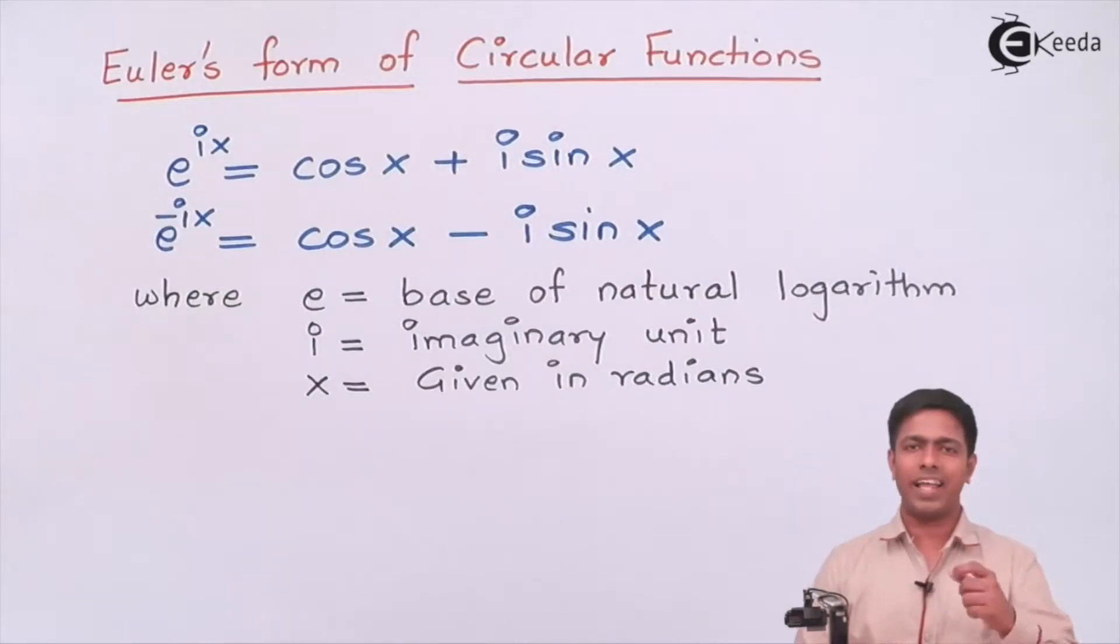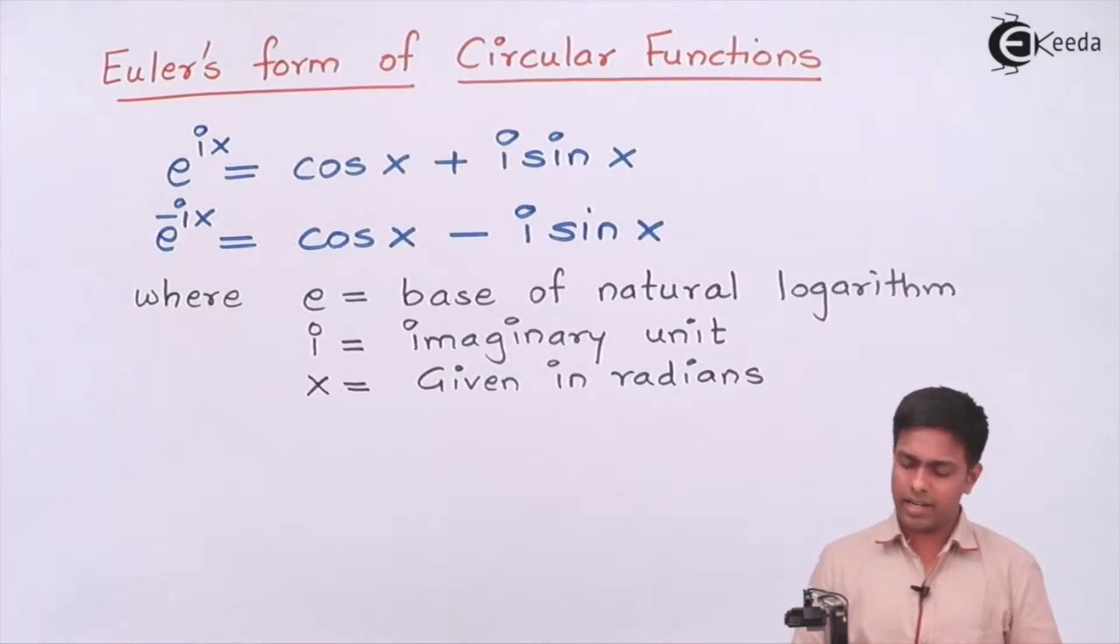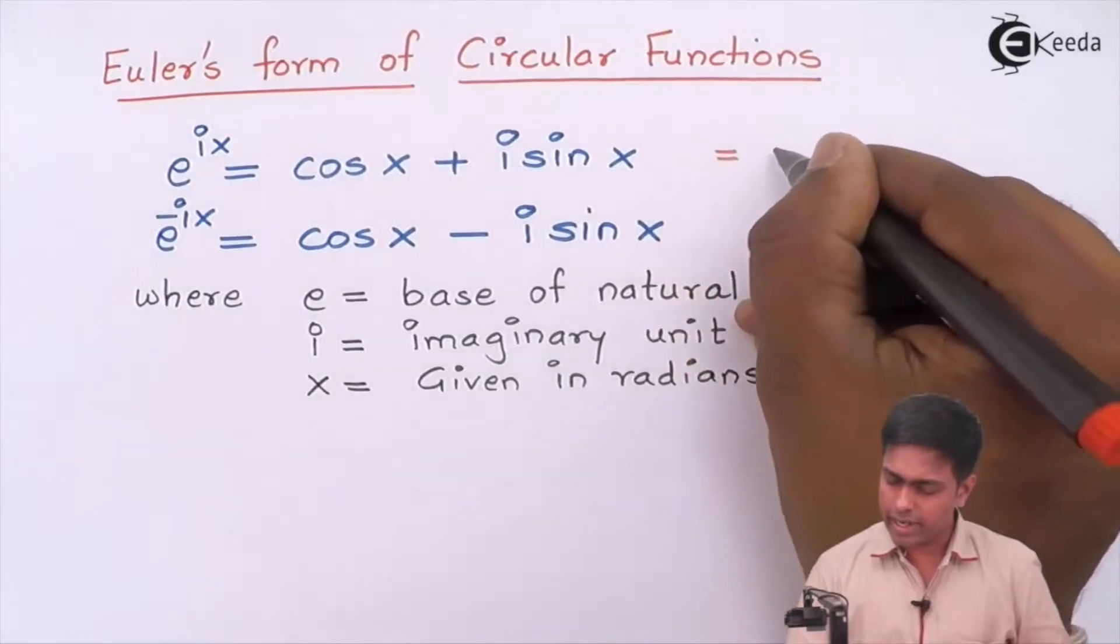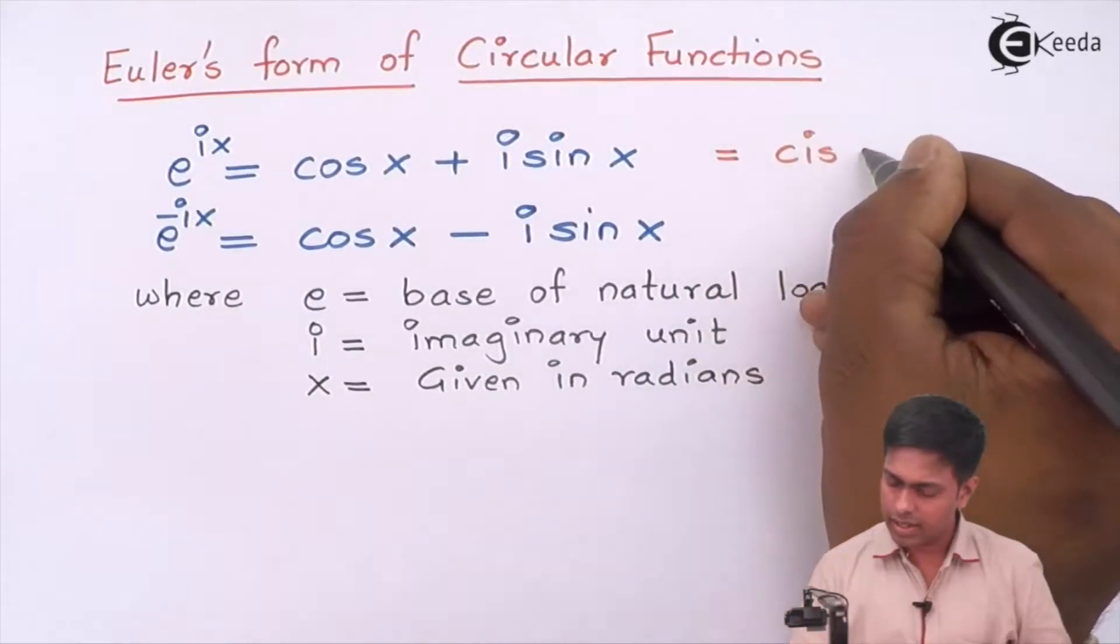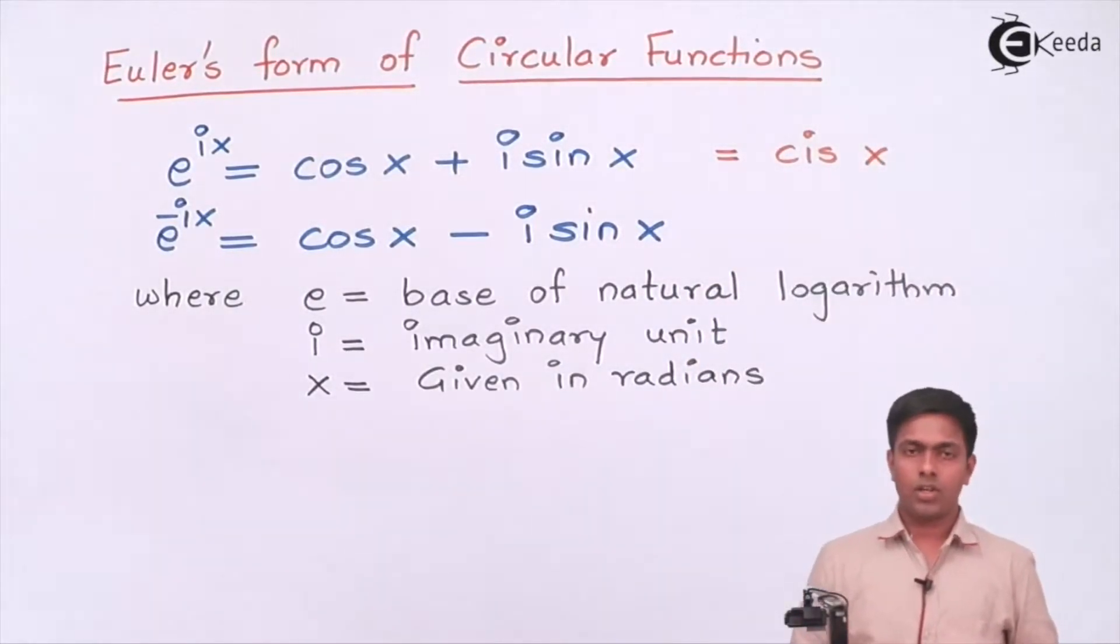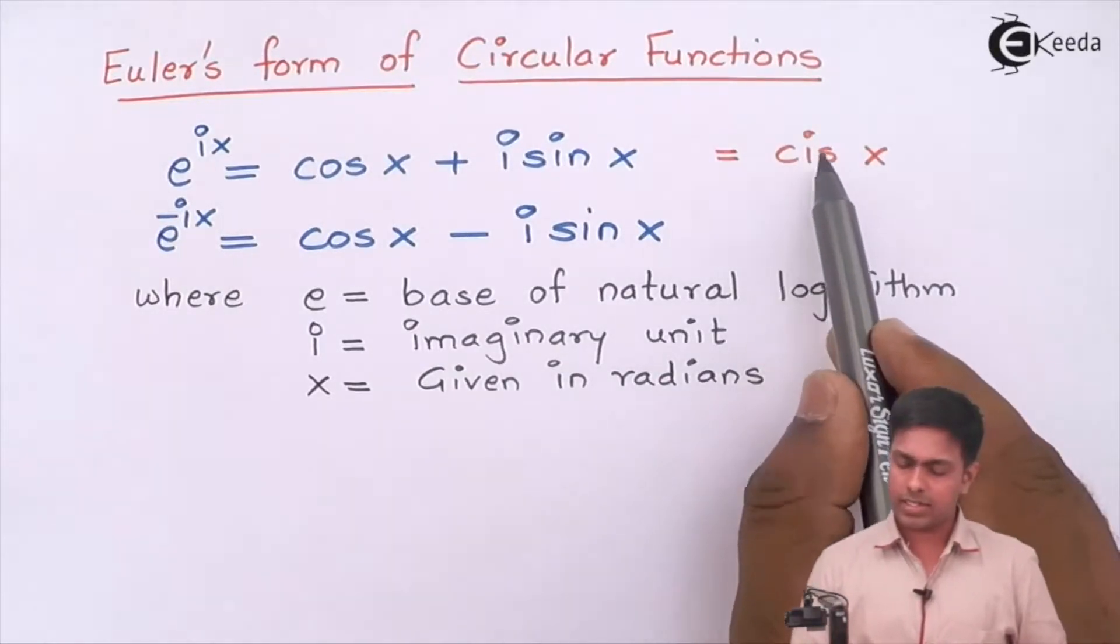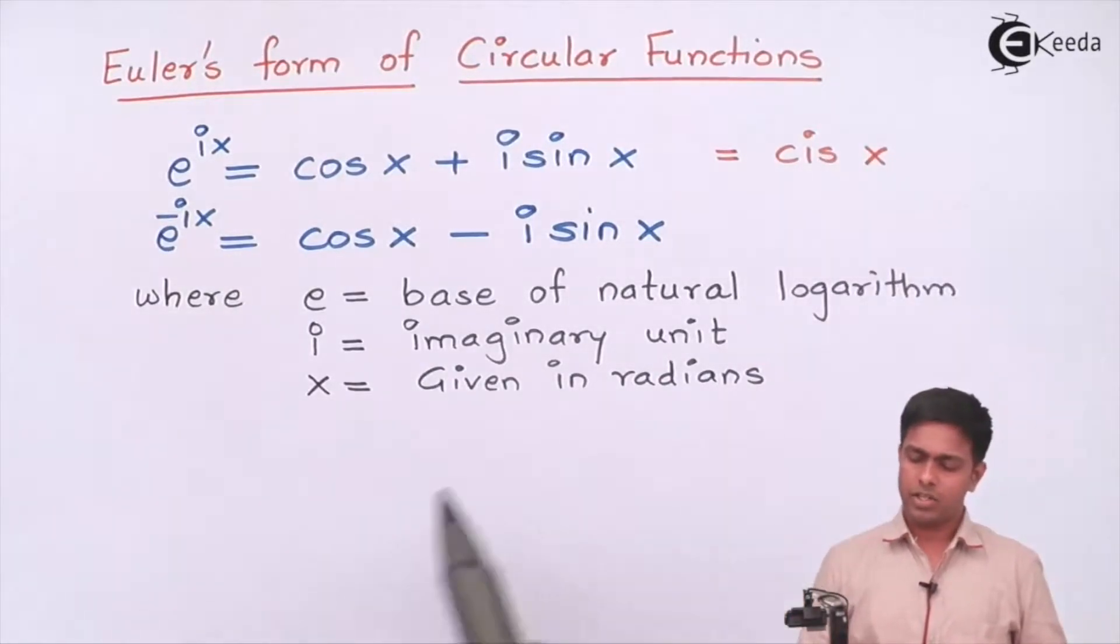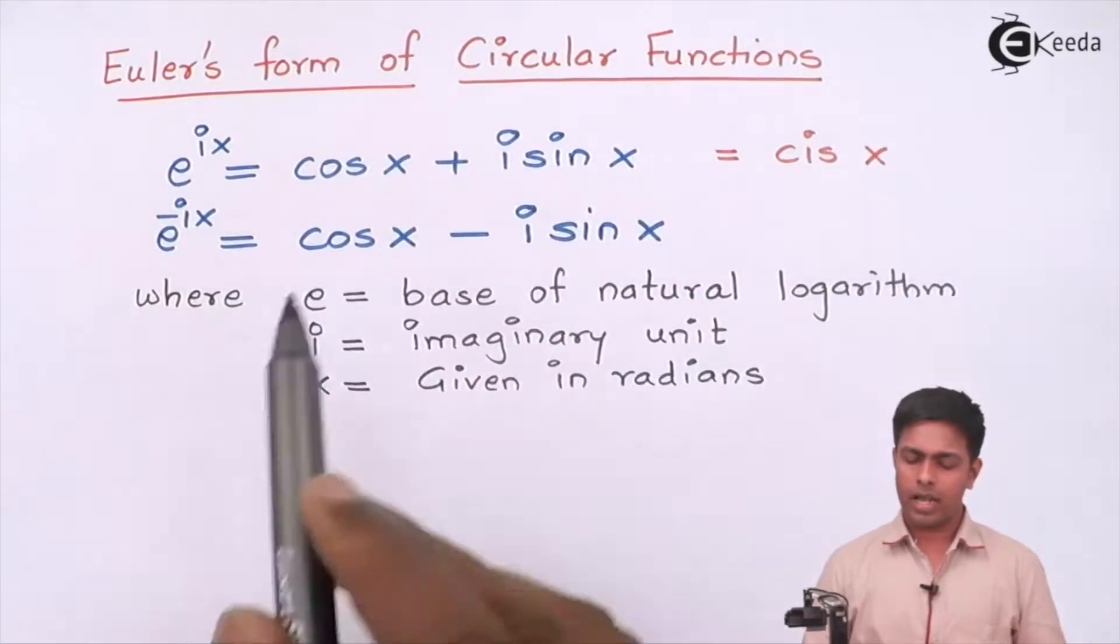e^(ix) = cos x + i sin x, or e^(-ix) = cos x - i sin x. It is also read as cis x, which is cos x + i sin x.